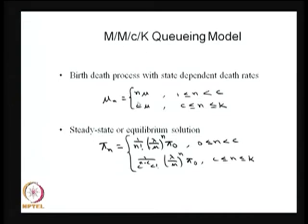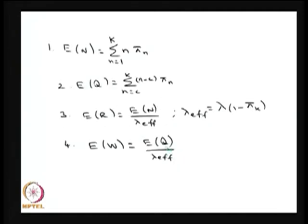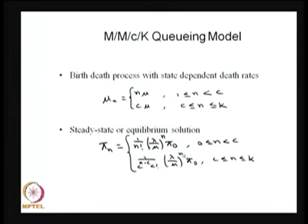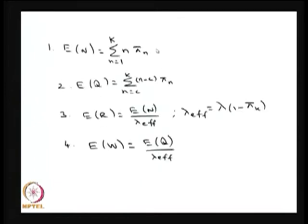That combination gives the state transition diagram. Since it is a finite capacity model, it is straightforward to obtain the steady-state equilibrium solution. First, solve pi Q equals 0 — write pi N's in terms of pi 0, then use the normalizing condition that the summation of pi N equals 1 to get pi 0. Substitute pi 0 back to get pi N completely.